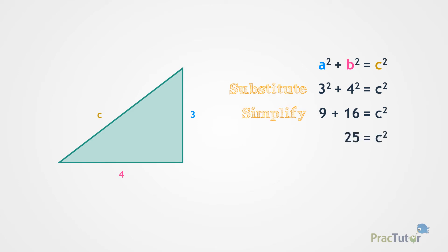c squared equals 25. If you find the square root of both sides of the equation, you find out that c, the hypotenuse, is 5 inches long.